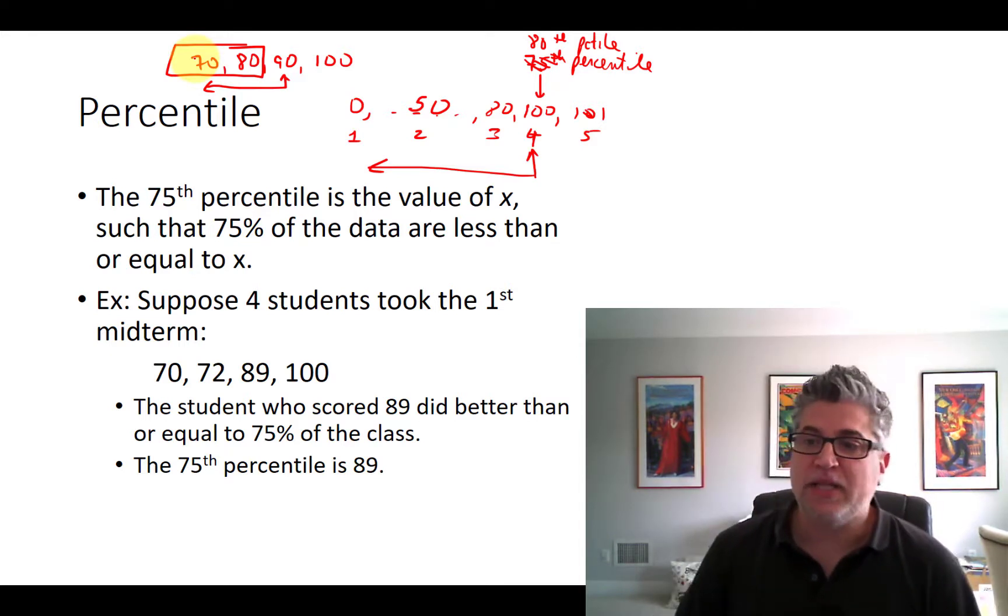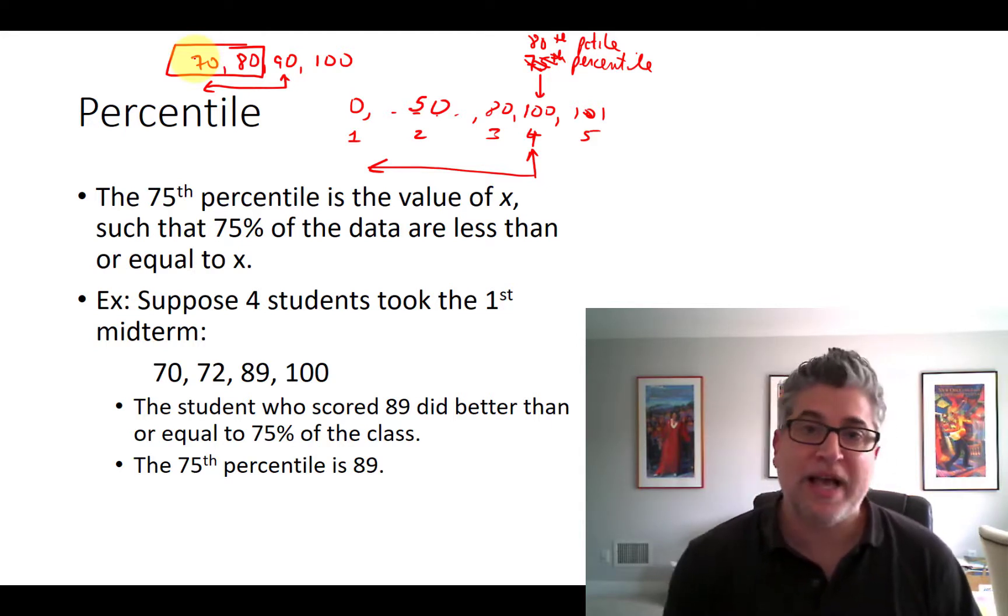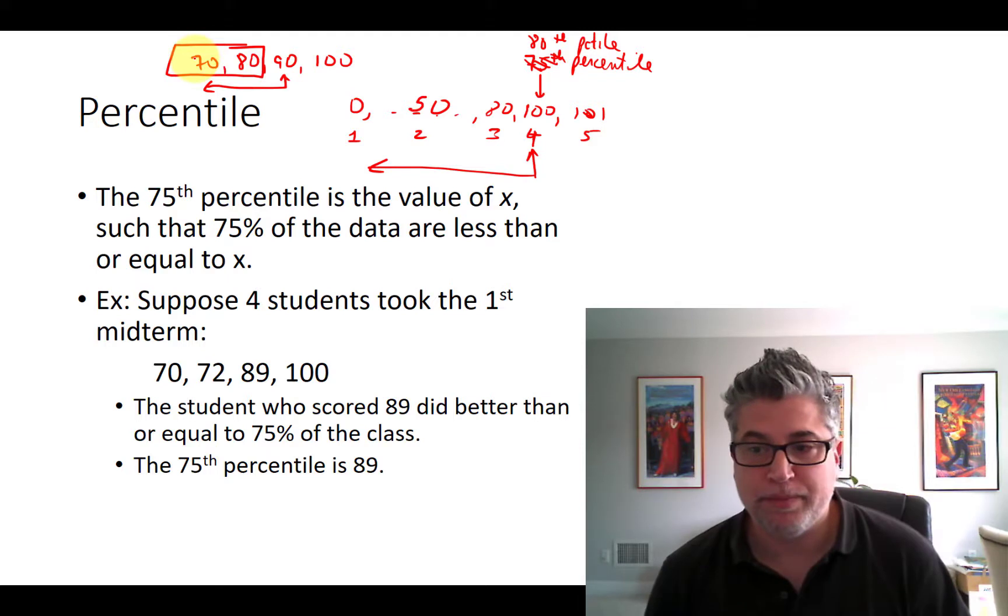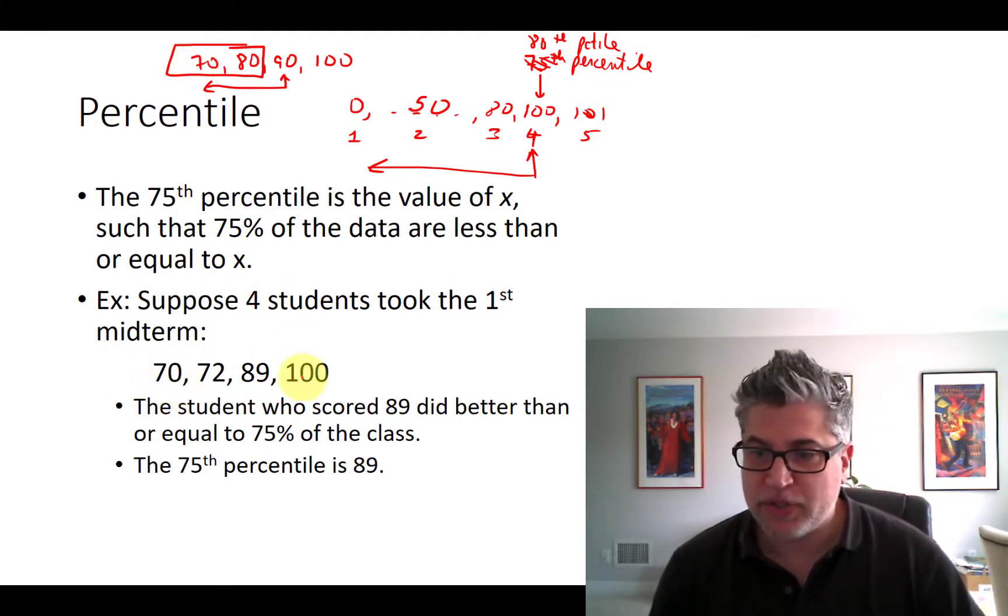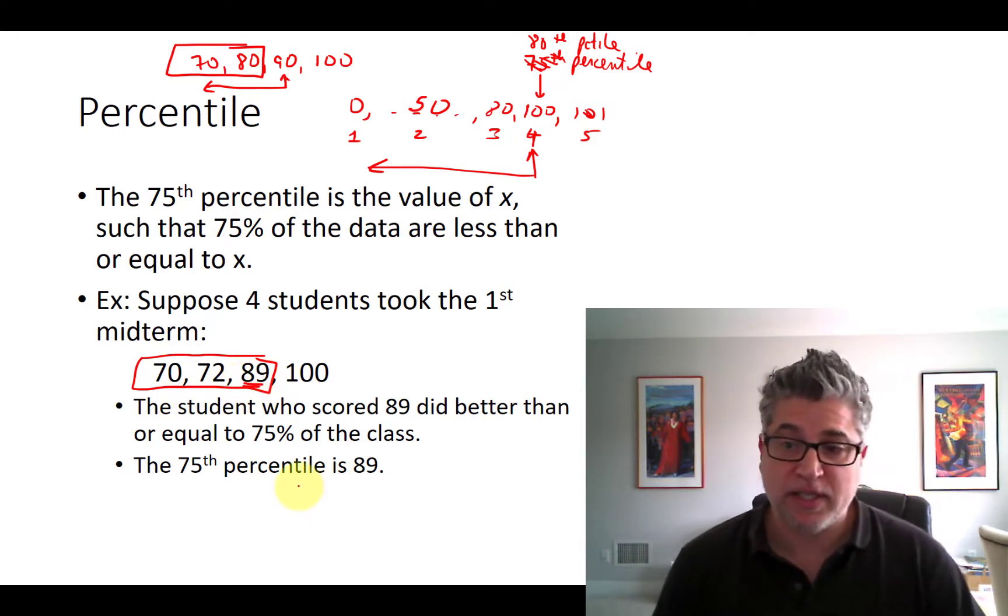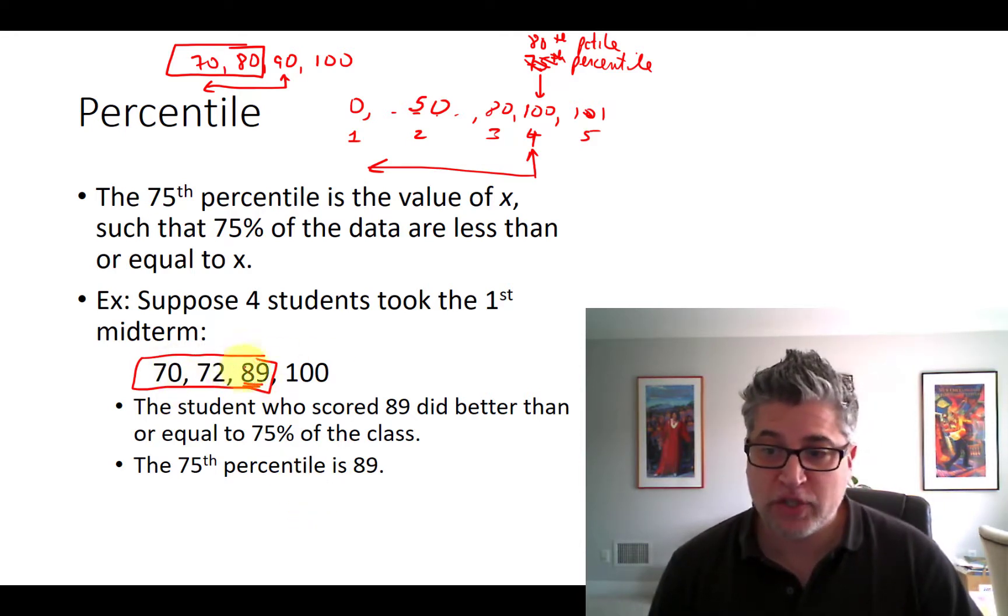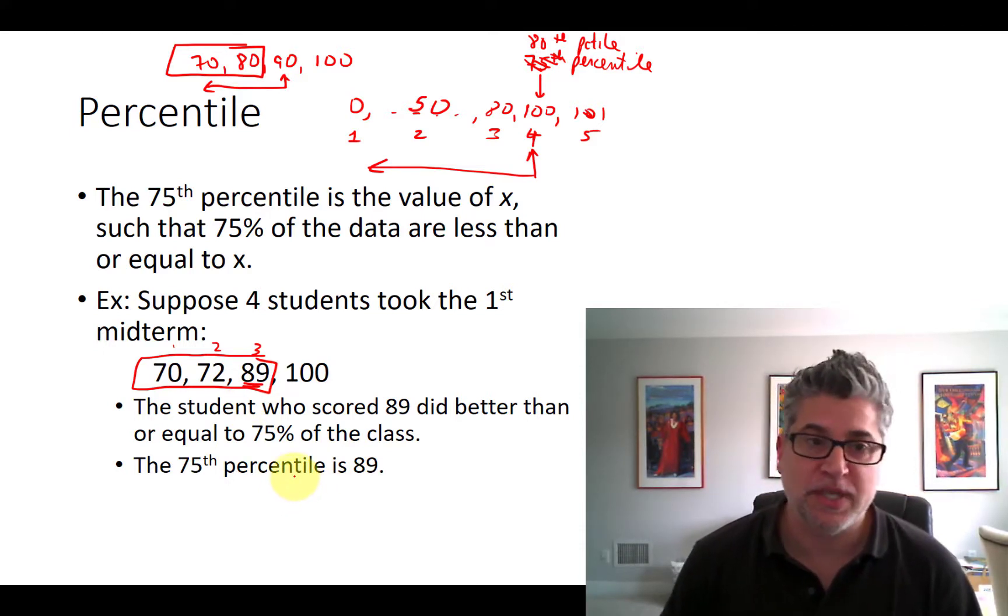That's what a percentile is. It's the percent of observations that were equal to or less than that particular number. I've got one other example here. We've got four students. This person right here at 89 is the 75th percentile student because we've got four observations. One, two, three, including this person, three out of the four scored less than or equal to 89. And so that's 75, 75th percentile. So that's percentile.